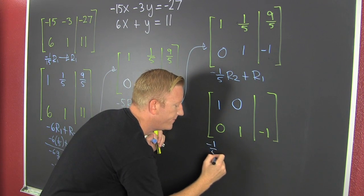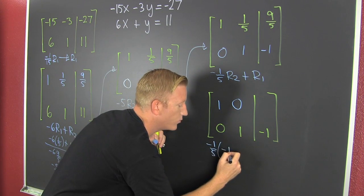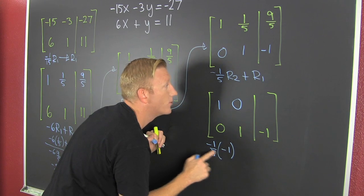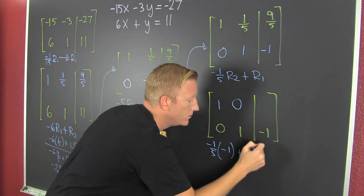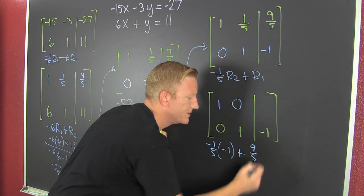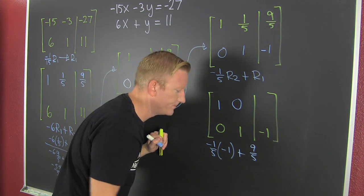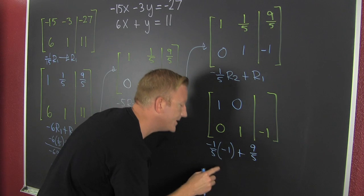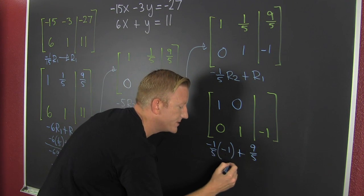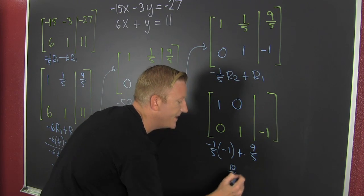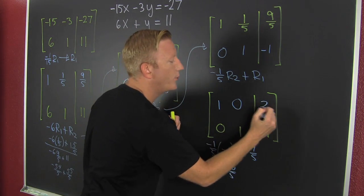So I have minus 1/5 times minus 1 because that's 1/5 row 2 added to the digit that's here. 9/5. That's not a digit. Can a digit be a fraction? I don't know. Anyway, we got the digits. And this is positive 1/5 plus 9/5 is 10/5. And that's how we end up with a deuce.